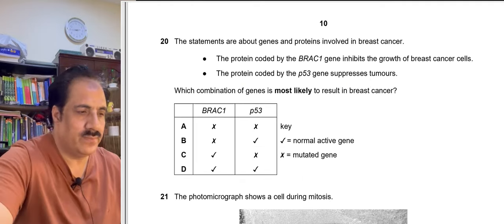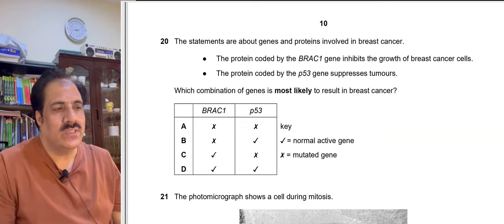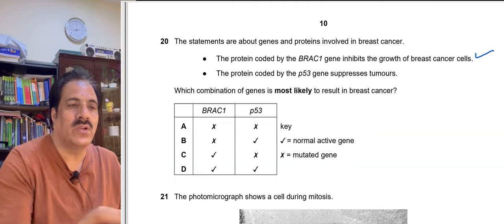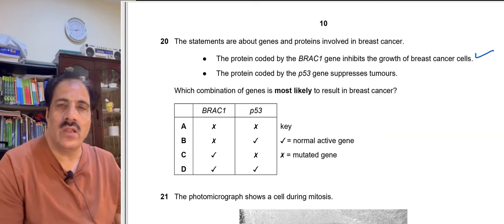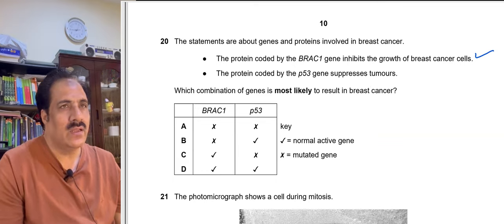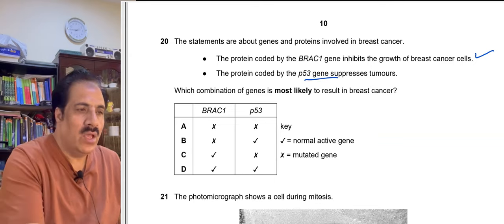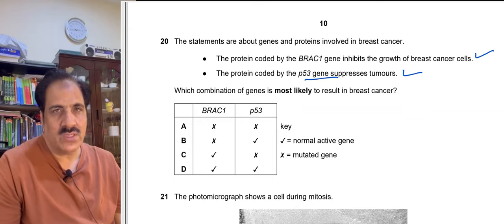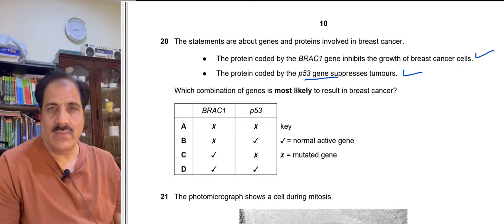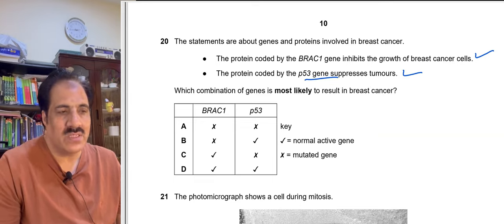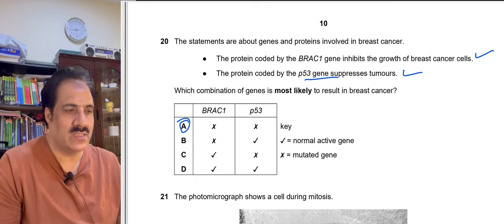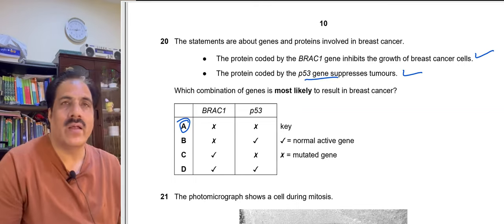Question 20: Regarding genes and proteins involved in breast cancer — the protein coded by the BRCA1 gene inhibits growth of breast cancer cells, and the protein coded by the p53 gene suppresses tumors. Which combination of genes is most likely to result in breast cancer? If both genes carry mutations and cannot function normally, breast cancer is most likely. Therefore option A — mutation in both BRCA1 and p53 — is the correct answer.